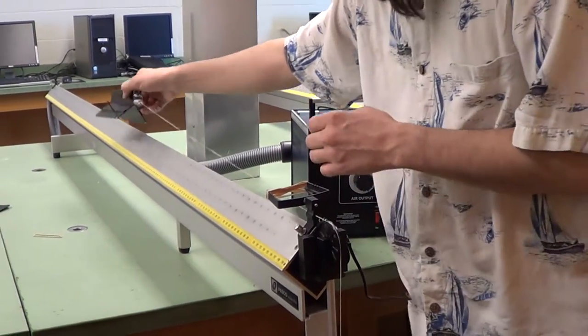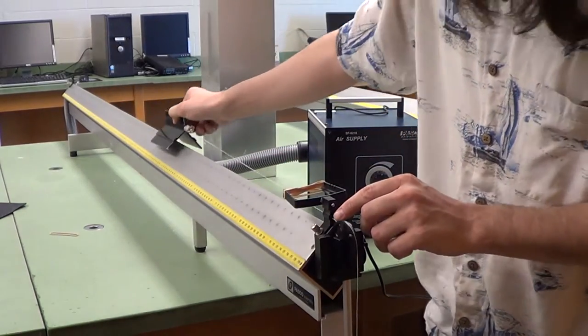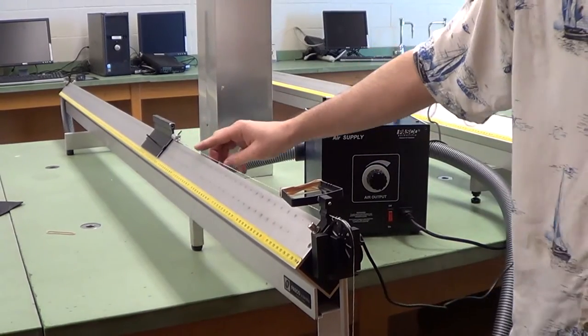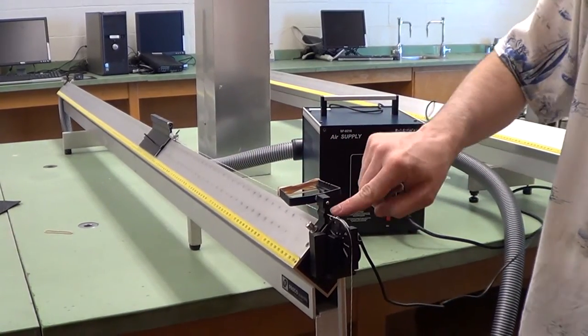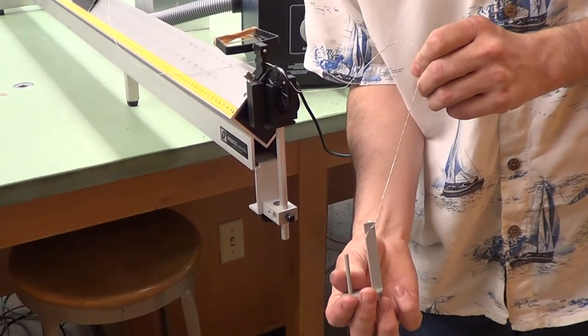You also have the glider car, which in this case has a hook on it. The hook is attached to the string here, running through a hole on the side and over, which is attached to a weight hanger.